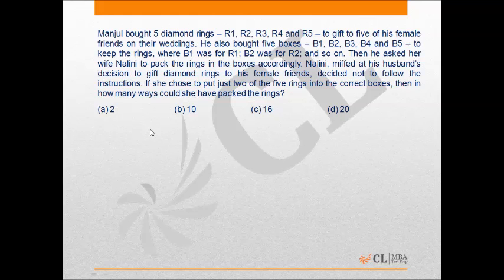This would be a level 2 question. Manjul has bought 5 different diamond rings in 5 different boxes to gift his female friends. He wants to pack those diamond rings into the 5 different boxes and asks his wife Nalini to do so. Nalini, annoyed that her husband is gifting diamond rings to his female friends, packs exactly 2 in the correct boxes and the rest in incorrect boxes. So if 2 are packed in correct boxes, that means 3 are packed in incorrect boxes.